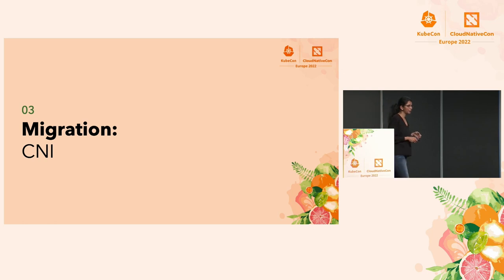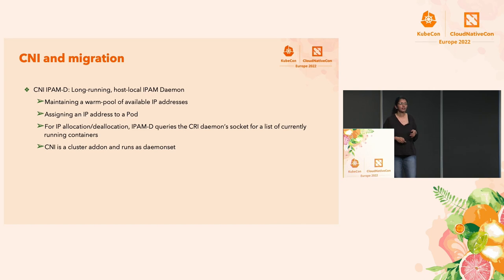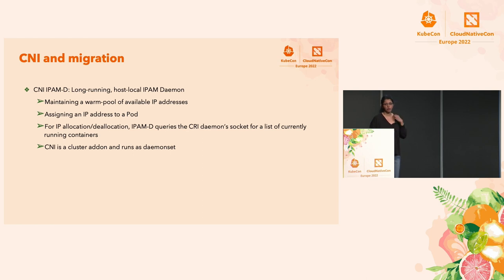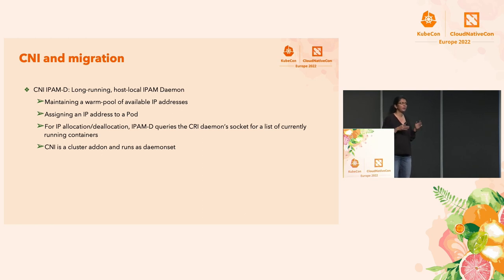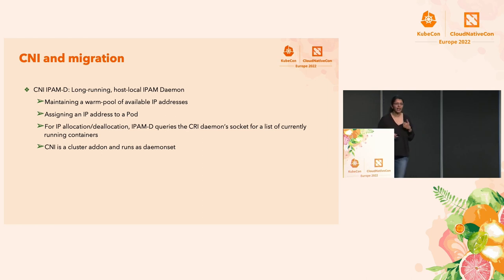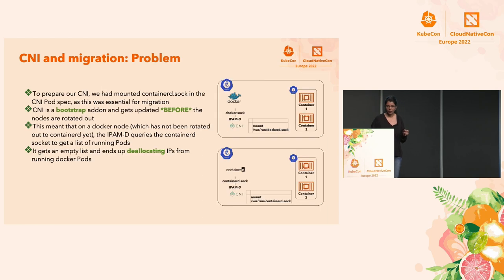The second gotcha I'll talk about is regarding CNI. The CNI we were using, along with pod and host networking stack wiring for container networking, also managed an IPAM daemon. The IPAM daemon was a local host daemon responsible for maintaining a warm pool of IP addresses to hand out to pods, and for allocating and deallocating IP addresses. For IP allocation and deallocation, it would query the CRI socket to get a list of running pods. CNI was running as a daemon set in all our cluster nodes.